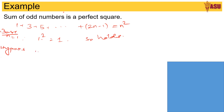Assume: 1 plus 3 plus 5 plus ... plus (2n minus 1) is equal to n squared. This is the assumption.